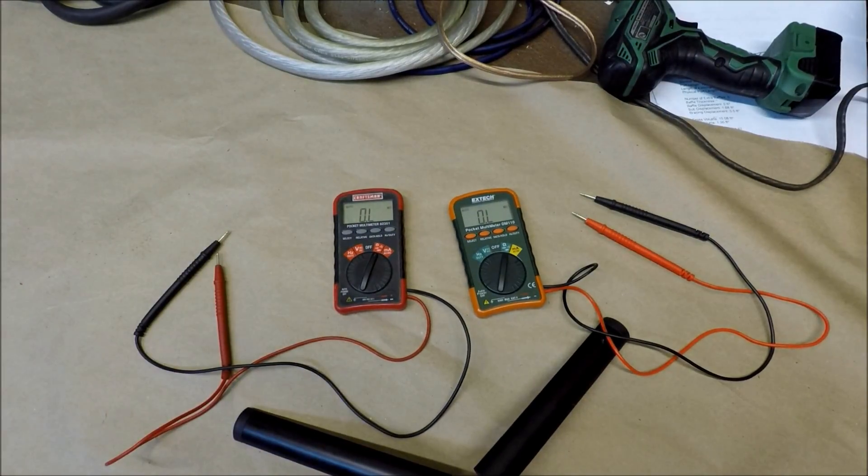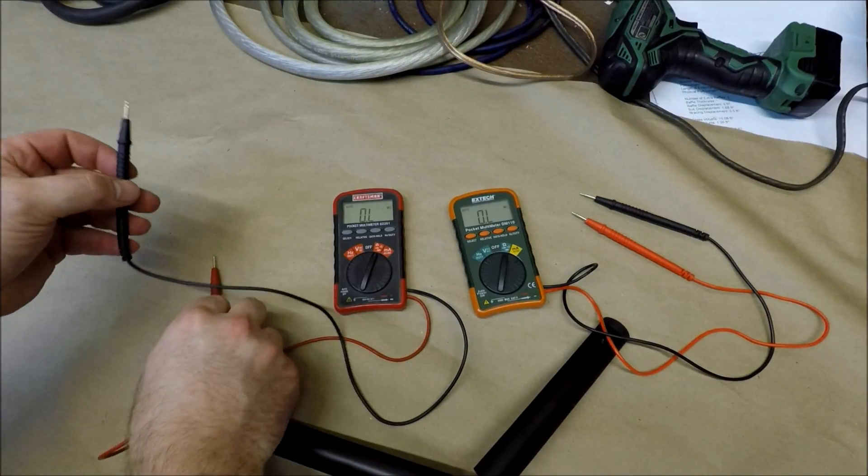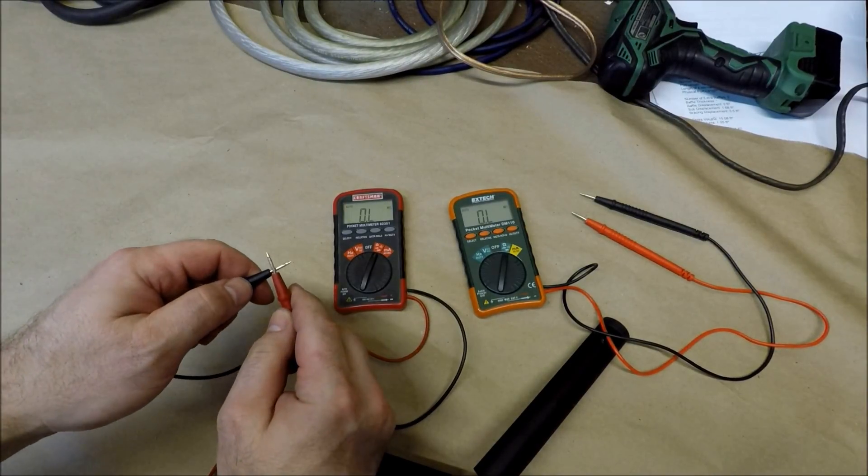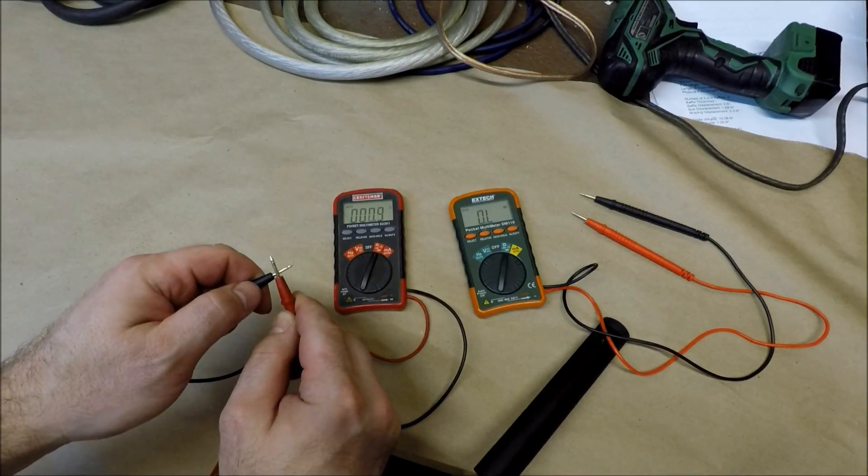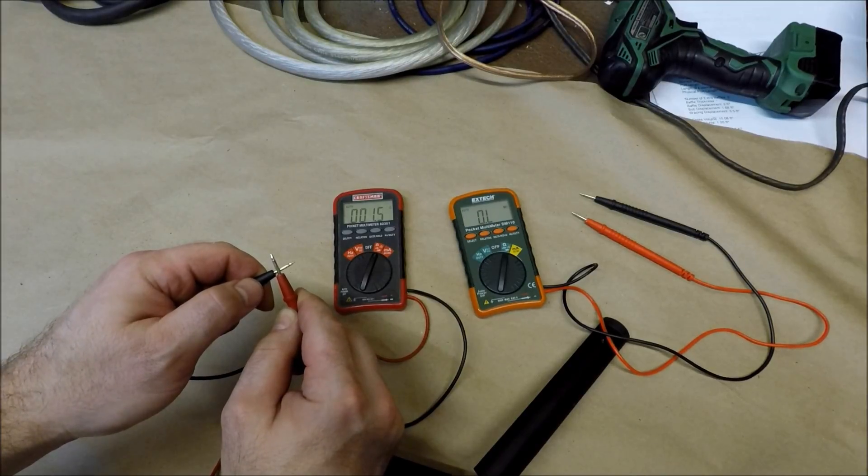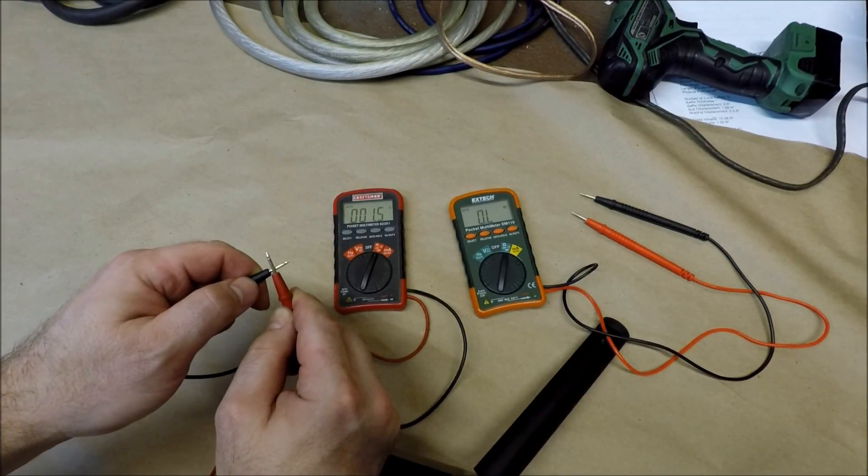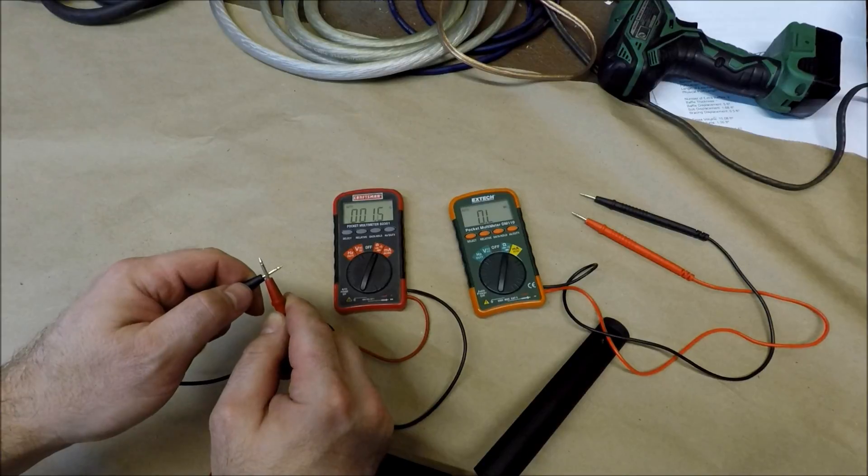If I'm trying to read the impedance of a subwoofer and I take this Craftsman, you touch your leads together and you're going to get impedances just all over the place. It's going to be everywhere. This is the type of DMM you do not trust.